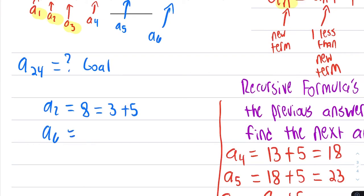To find A6, we would take the number 3, and then add on to it 5 times 5. To find A7, we would have taken the number 3, and then add it on to it 6 times 5.